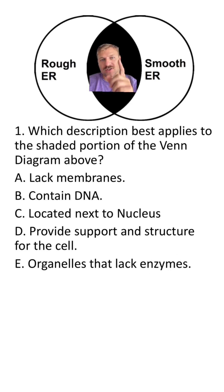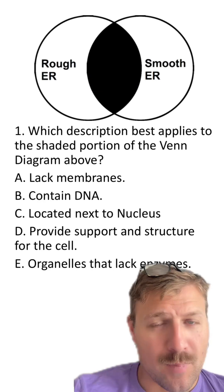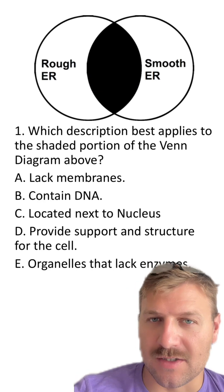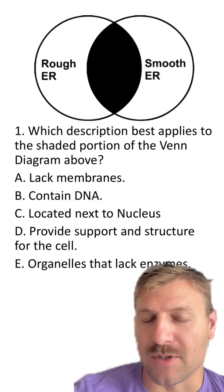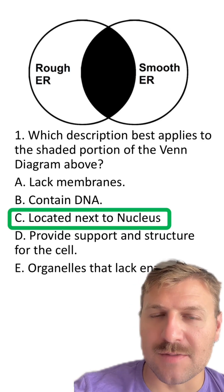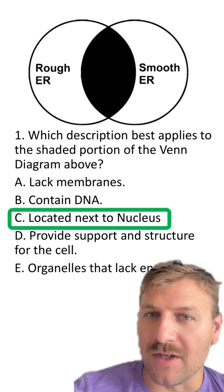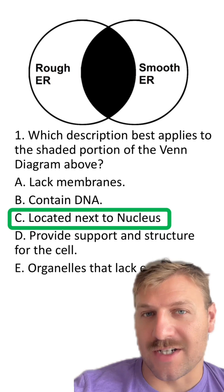Out of the five answers, what answer belongs in this region that's a characteristic of both rough ER and smooth ER? Pause this video if you need more time to read the answers and make your selection. Remember that ER stands for endoplasmic reticulum. The answer here is C — both the rough ER and smooth ER are located next to the nucleus. Typically the rough ER is closer to the nucleus, but they are interconnected.